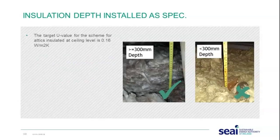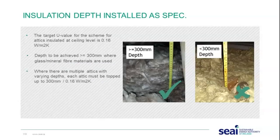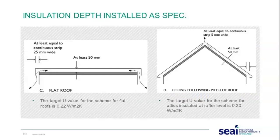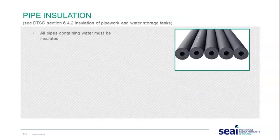The target U-value for scheme attics at ceiling level is 0.16, and the depth required is 300 millimetres when using mineral fibre. Where there are multiple aspects with varying depths, each attic must be topped up to 300 millimetres to achieve around 0.16. For a flat roof, the target U-value is 0.22, and for ceiling-followed insulation where the ceiling follows the pitch of the roof, the target is 0.20.